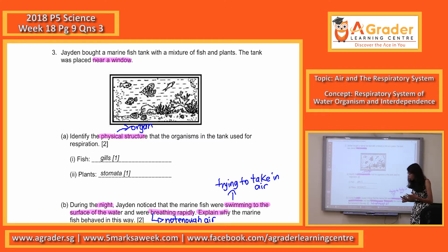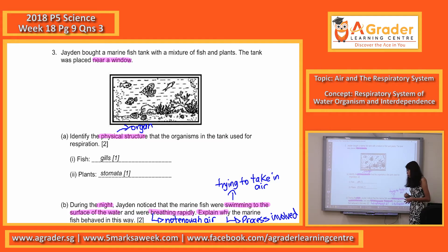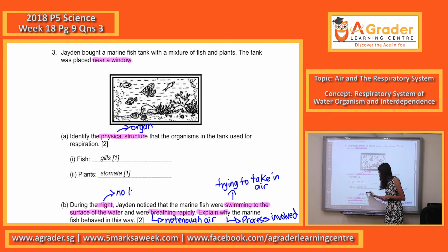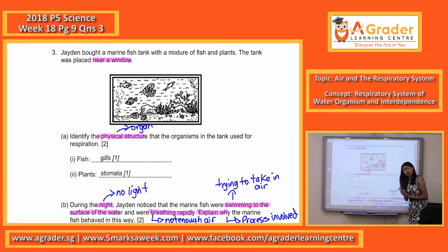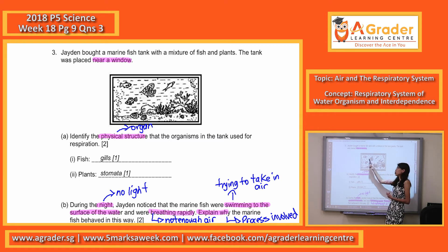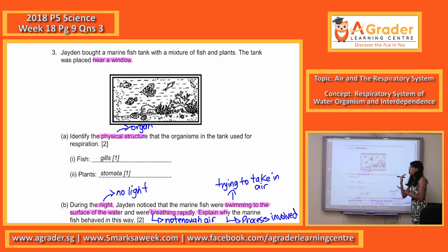All you have to do is explain why in terms of processes that are involved. In this topic, there are two main processes involved. During the night, always remember there is no light. What happens is that the plants cannot photosynthesize because there's no light. When they cannot photosynthesize, there will be no oxygen being produced. So instead, the plants only go through respiration, and they are actually competing with the fish for oxygen. So the fish do not have enough oxygen to breathe.